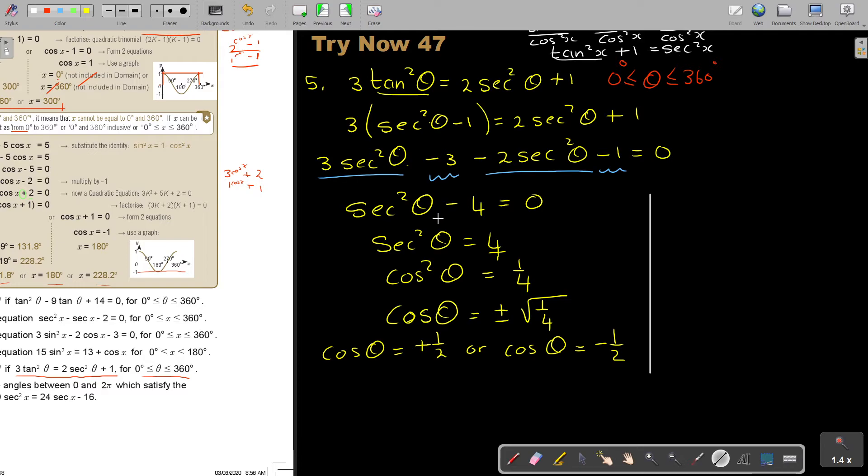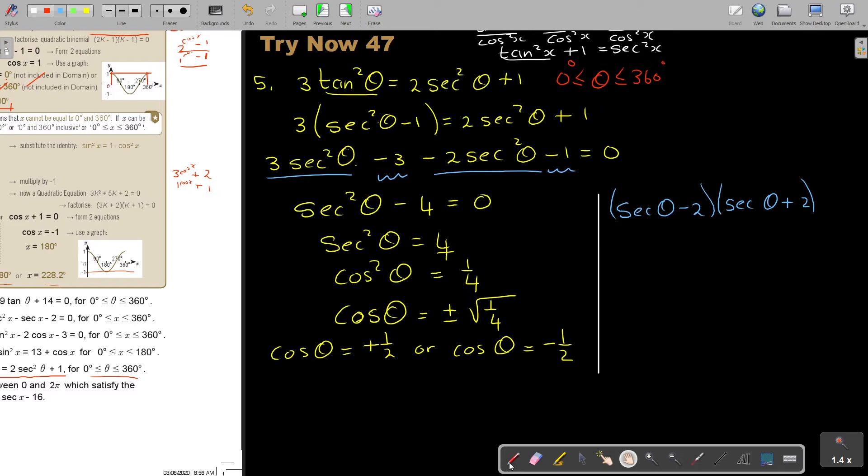In the teacher's guide, I handle it as difference between two squares. I was handling it as sec theta minus two, sec theta plus two. And that is equal to zero. So, sec theta equals positive two, or sec theta equals negative two. And if I then make it cos theta, it's positive a half, or cos theta equals negative a half. That's exactly the same. So, it doesn't matter. As long as you come to these two. Now, I can go to the sketches. And we did that in previous videos.